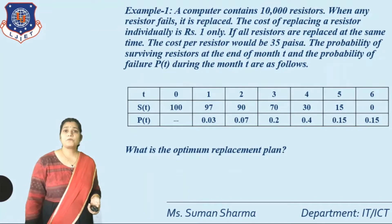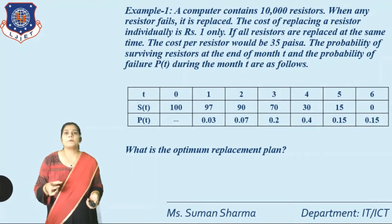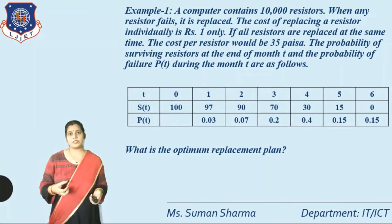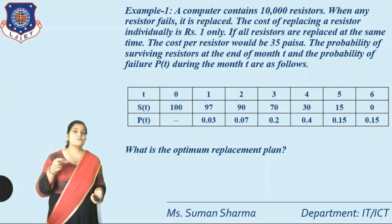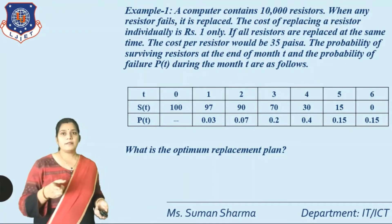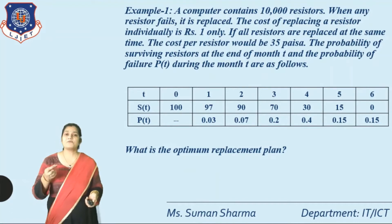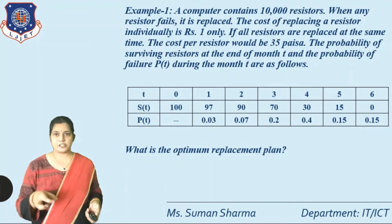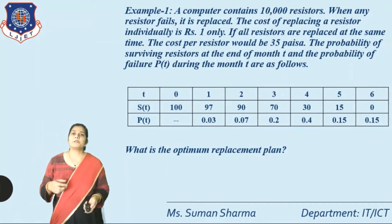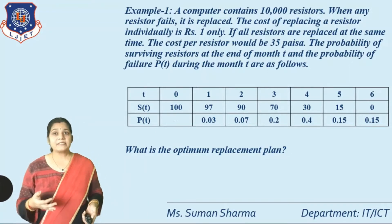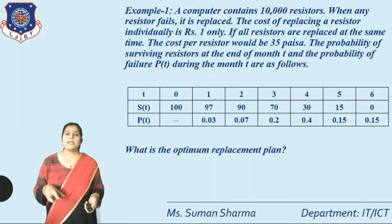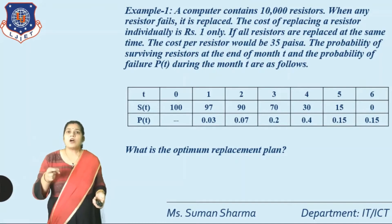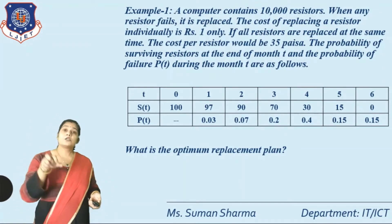The probability of a surviving register at the end of month T and the probability of failure PT during month T are given. In this type of question always first check the total probability — if the sum equals 1 then the question is in correct form. If the total probability is not equal to 1 there is some error in the question.